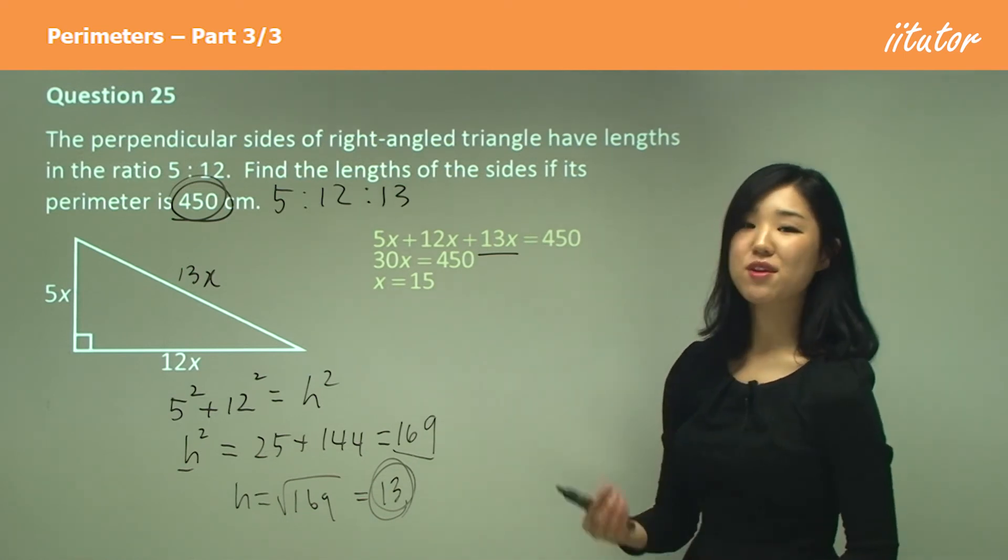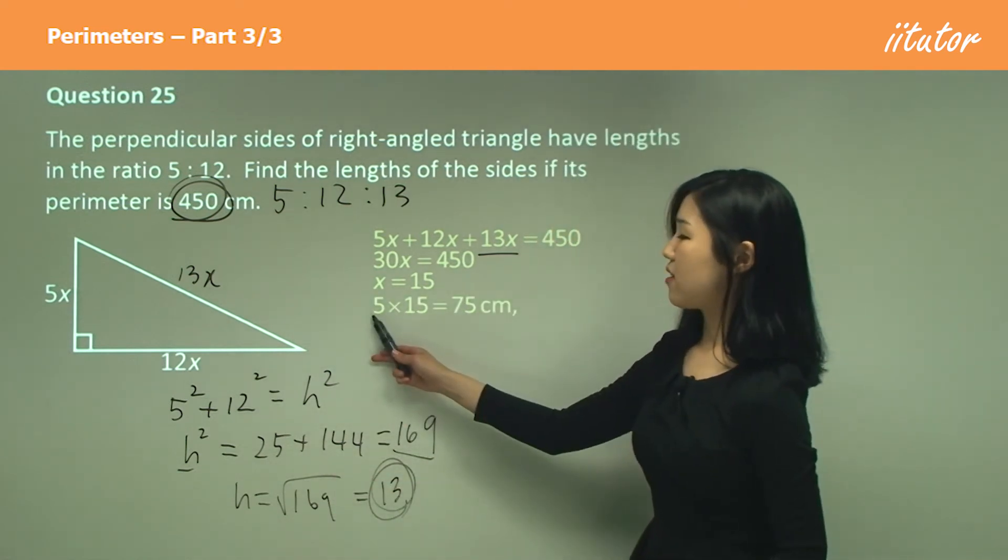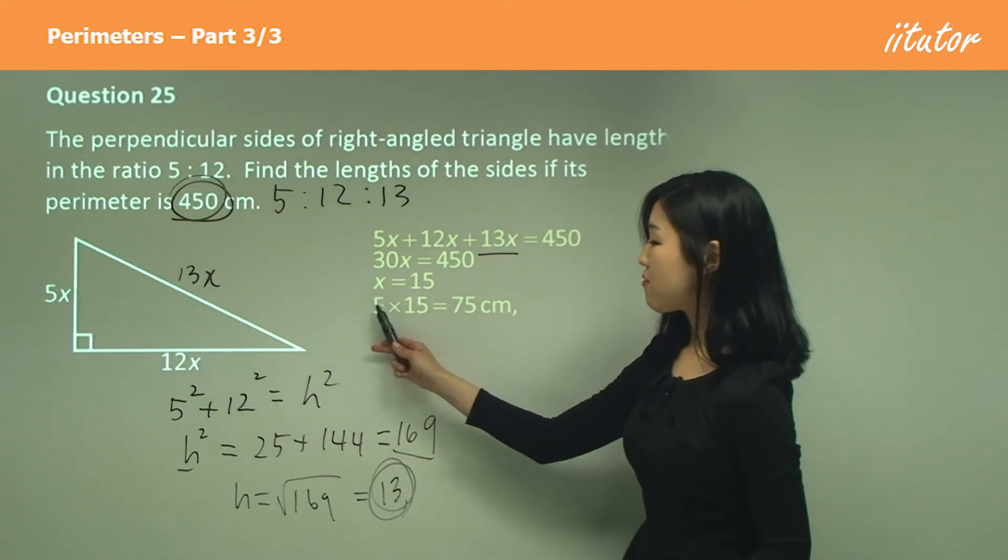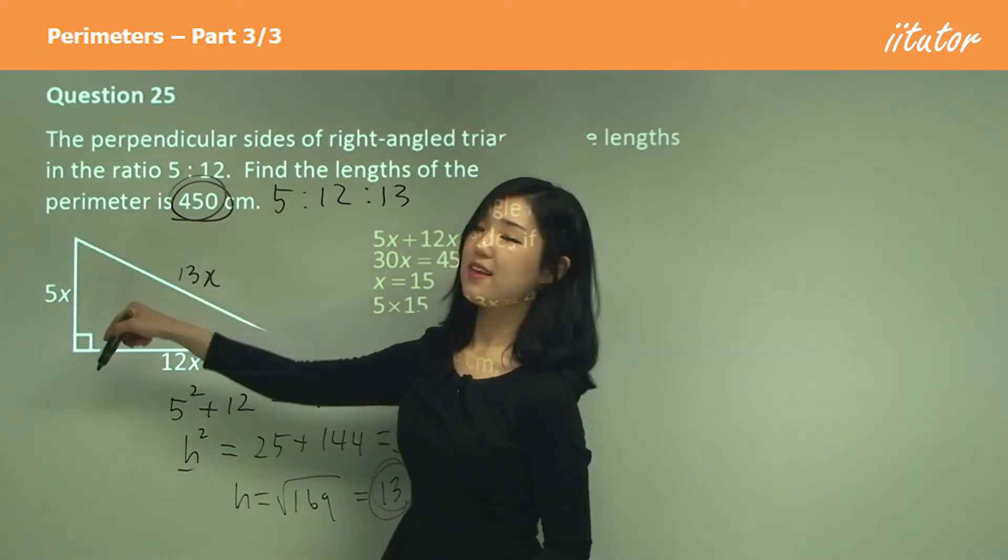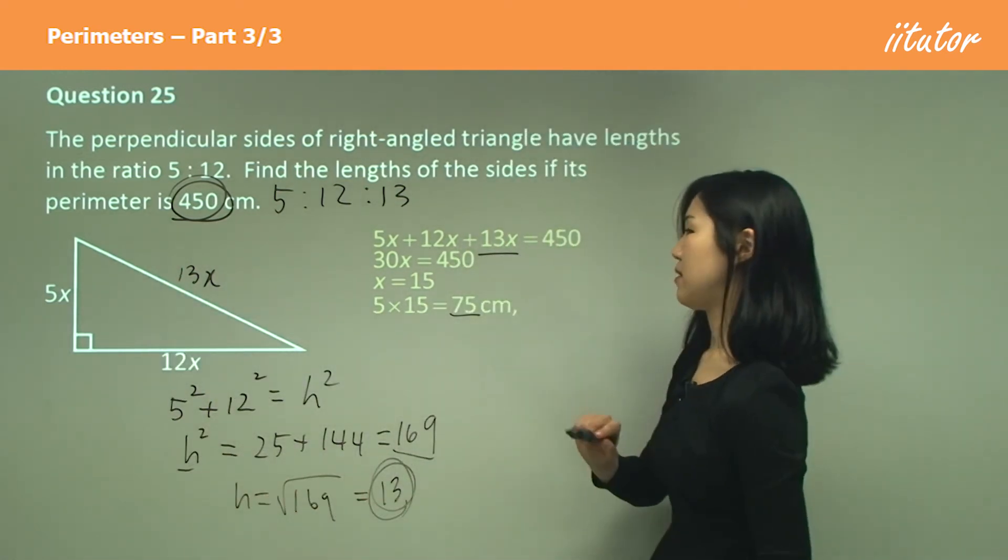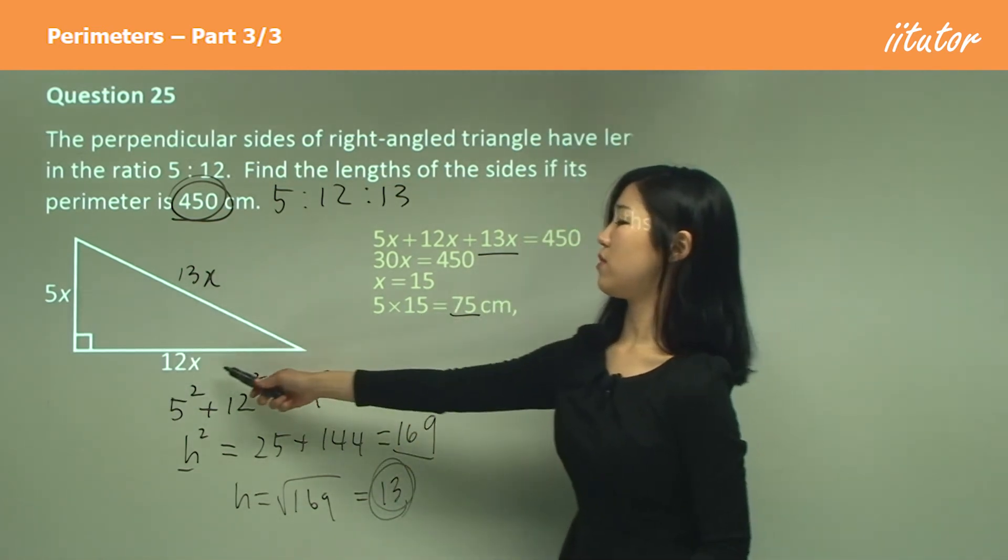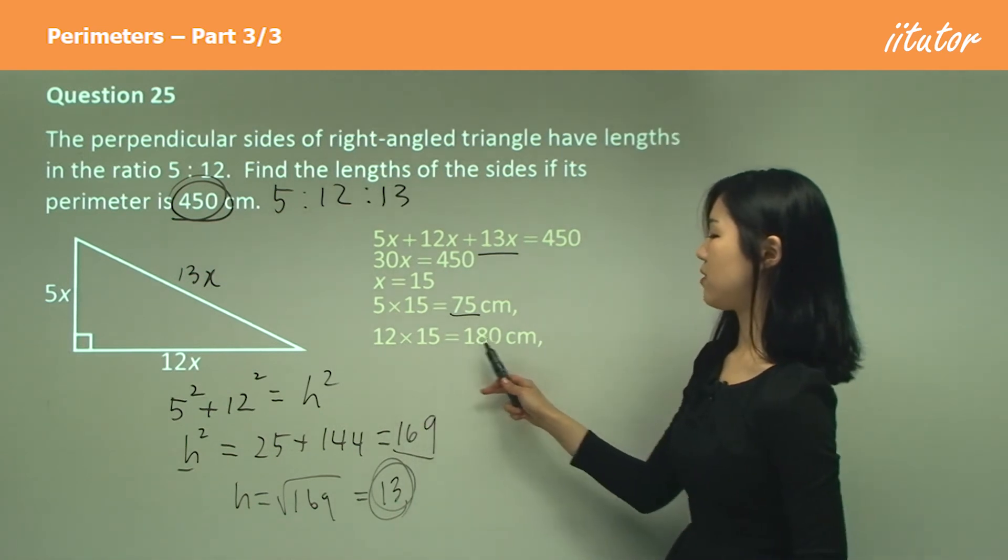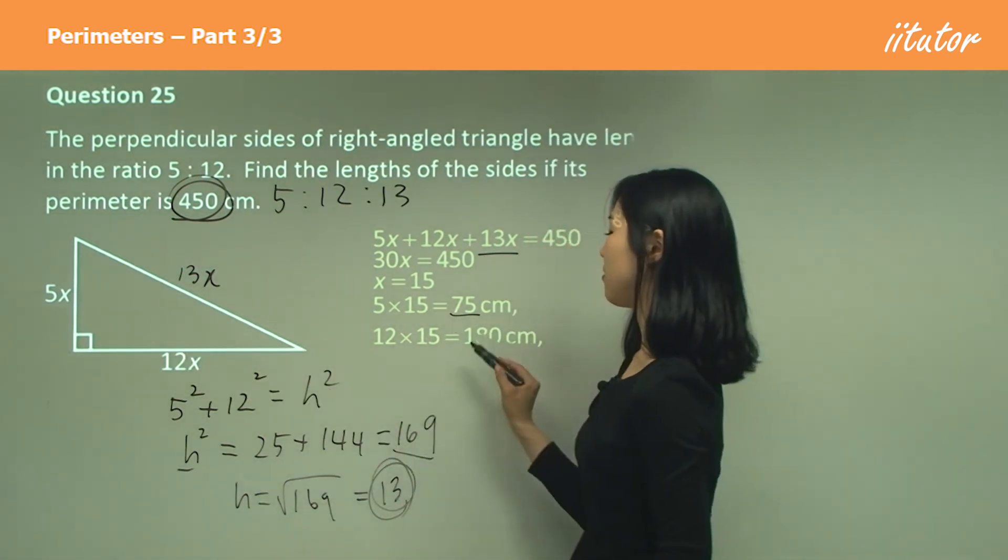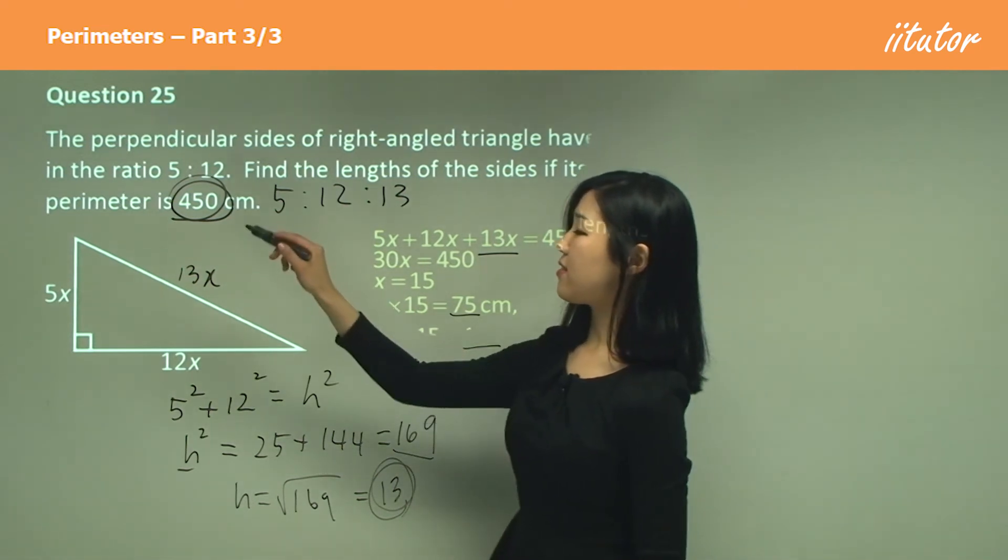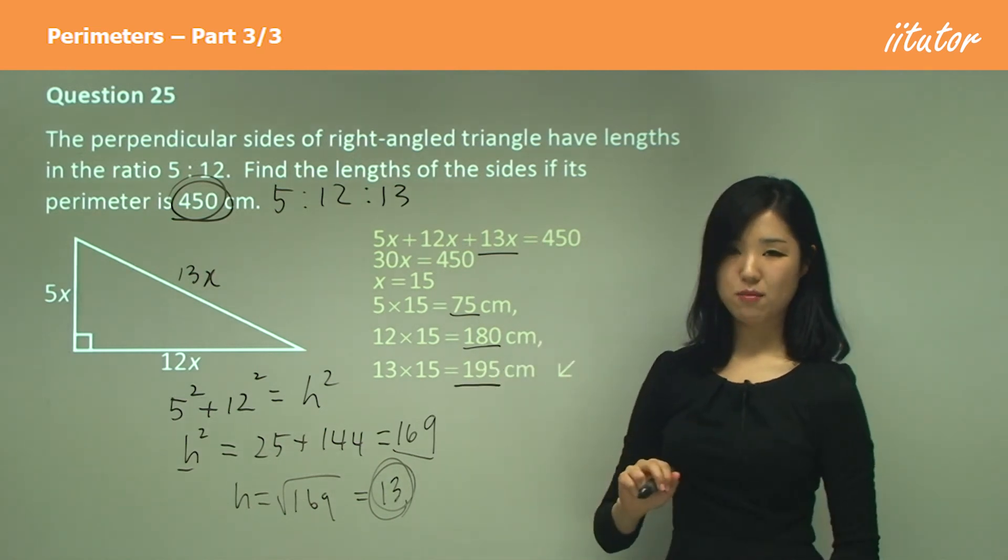Now we can find the individual sides. First, 5x where x is 15. So 5 times 15 is 75 centimeters. Then 12x—12 times 15 is 180 centimeters. And the third side is 13x, so 13 times 15, which gives you 195 centimeters.